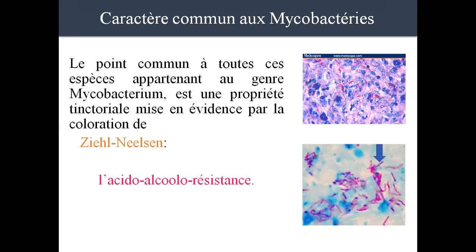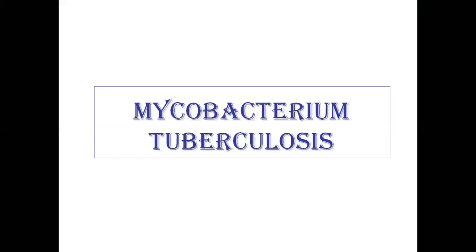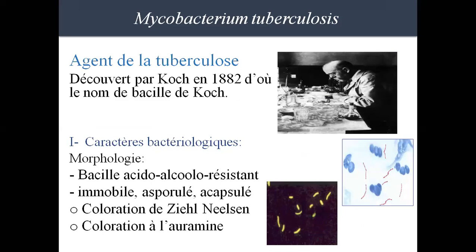On va parler du Mycobacterium tuberculosis, agent de la tuberculose, découvert par Koch — c'est pourquoi on l'appelle BK. La morphologie : c'est un bacille acide-alcool résistant, révélé par plusieurs techniques parmi lesquelles le Ziehl-Neelsen, que tout laboratoire doit maîtriser au minimum pour diagnostiquer cette bactérie. On peut également utiliser des colorations spécifiques telles que l'auramine. Découverte par Koch dans les années 1880. Caractéristique : le bacille acido-alcoolo-résistant.